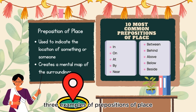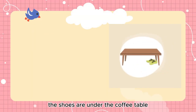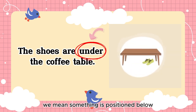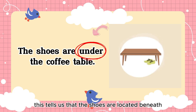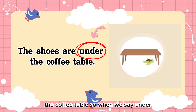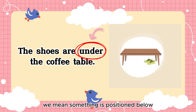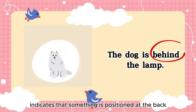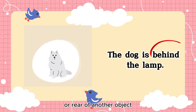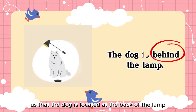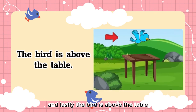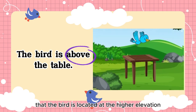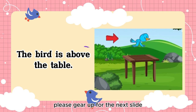Here are three examples of prepositions of place in action. First: 'The shoes are under the coffee table' — 'under' means something is positioned below or beneath another object, telling us the shoes are beneath the table. Second: 'The dog is behind the lamp' — 'behind' indicates something is at the back or rear of another object, so the dog is at the back of the lamp. Third: 'The bird is above the table' — 'above' tells us something is positioned at a higher level, meaning the bird is at a higher elevation than the table.